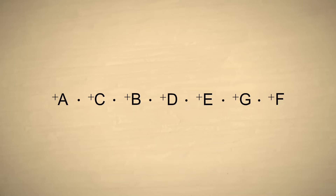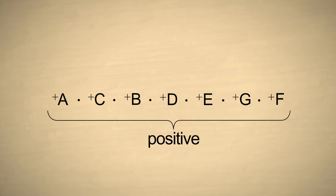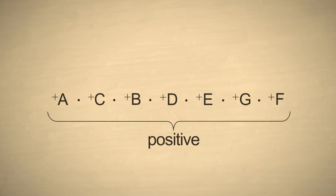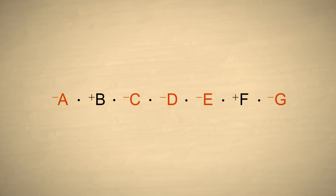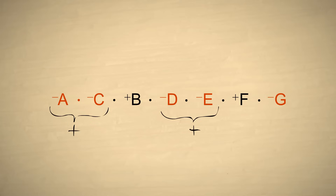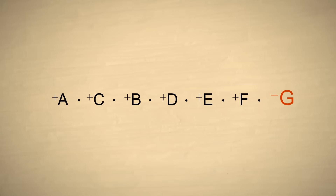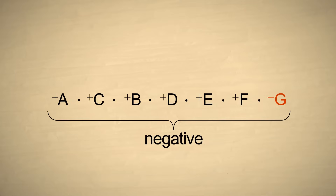Since there was an even number of negative numbers, after each pair of negatives was changed to positives there were no negative numbers left over. Therefore, the result of the multiplication is positive. Now let's see what happens if we have an odd number of negative numbers. Once again, we group the negative numbers into pairs and change their signs. But one unpaired negative number is left. So this time, the result of the multiplication is negative.